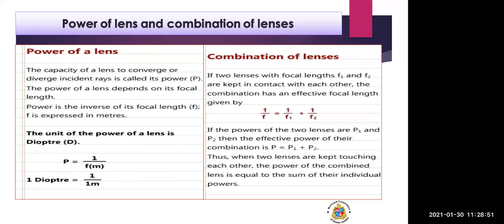When two lenses are given, we consider their individual focal lengths and powers and combine them to get the total effective focal length or total effective power. We do not consider them separately — we add power 1 (power of first lens) and power 2 (power of second lens) to get the combined power.